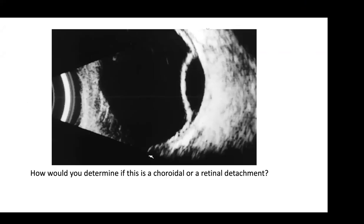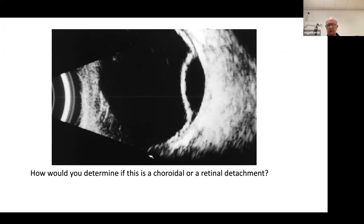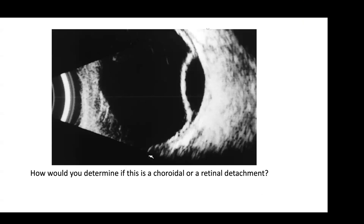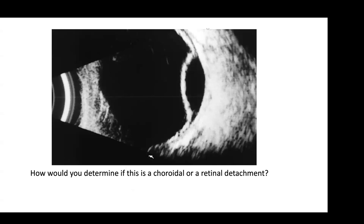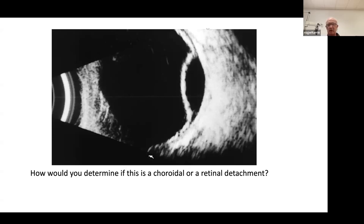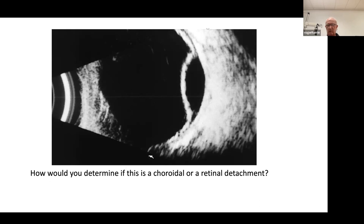Obviously there's a membrane in the fundus. The question is: how do you determine if this is a choroidal detachment or a retinal detachment? Especially if the patient's awake and able to move their eyes, you can see how a retinal detachment is sometimes more bolus and will move, whereas a choroidal won't move as much. Choroidals are often attached to the vortex veins, which limits movement. It's kind of a scalloping or convex shape — this right lower one shows a typical choroidal.